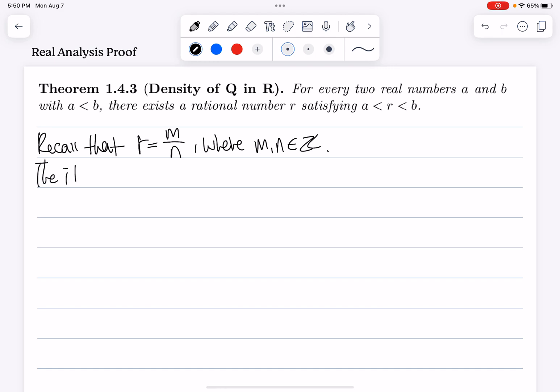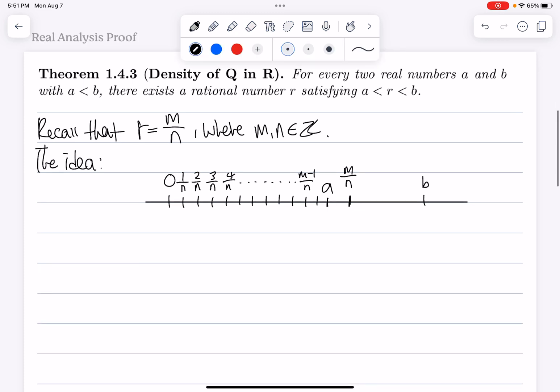The idea of this proof is to choose those two integers M and N such that we have a rational number M over N sitting in between those two numbers. So the first idea is to choose N large enough so that the consecutive increments of 1 over N is eventually going to enter the interval A through B. So this is 1 over N, 2 over N, 3 over N, 4 over N, and so on, until M minus 1 over N, and the next one is going to be M over N, which is going to step inside.